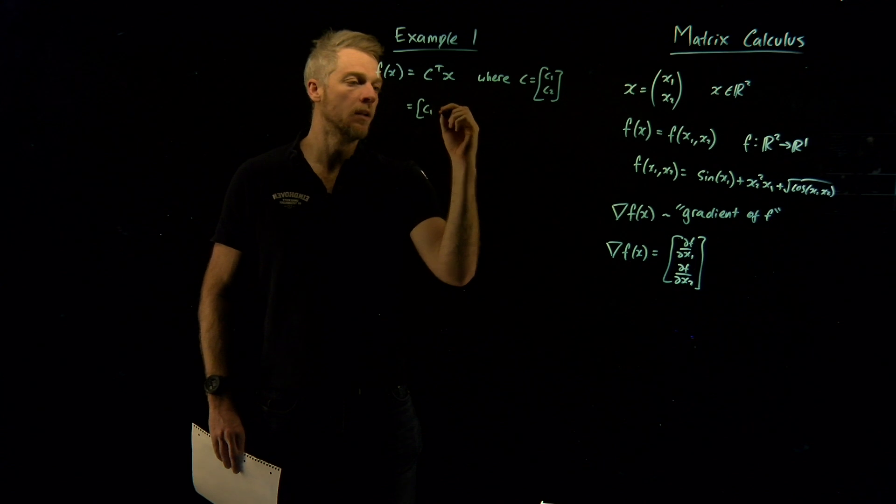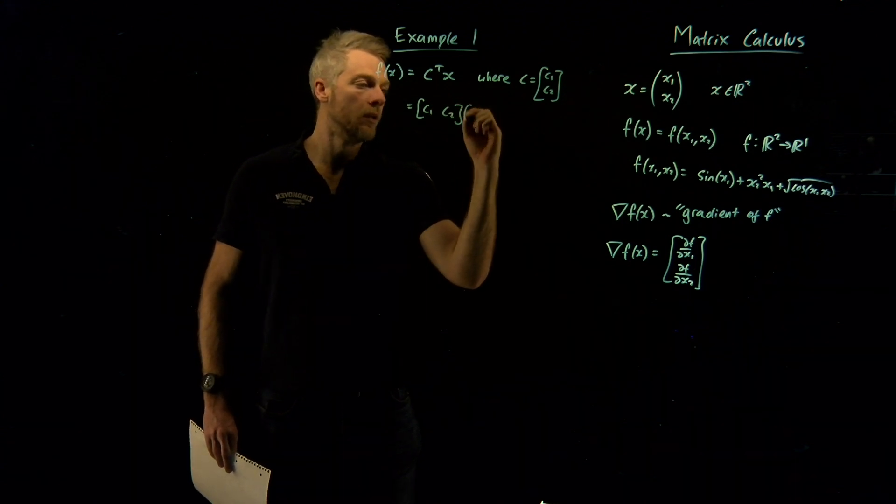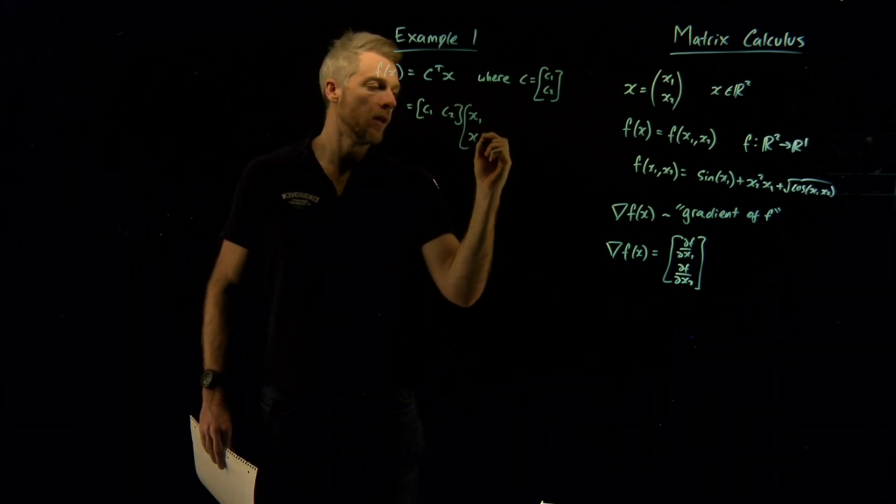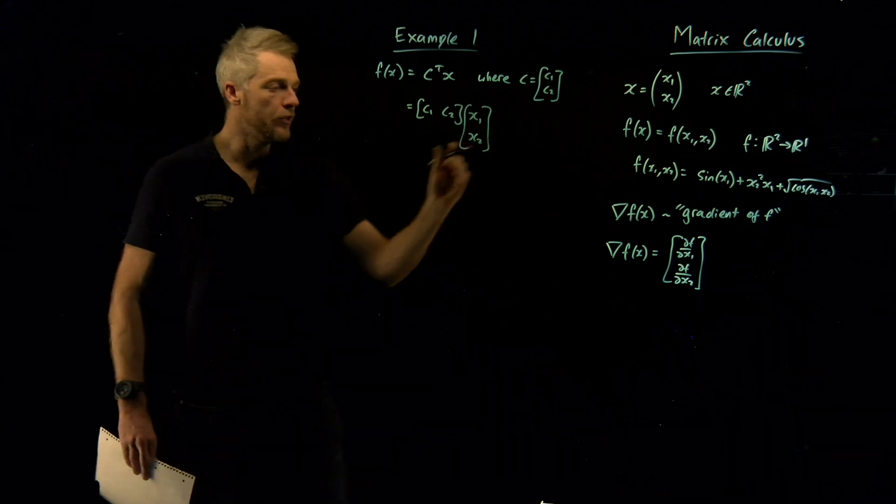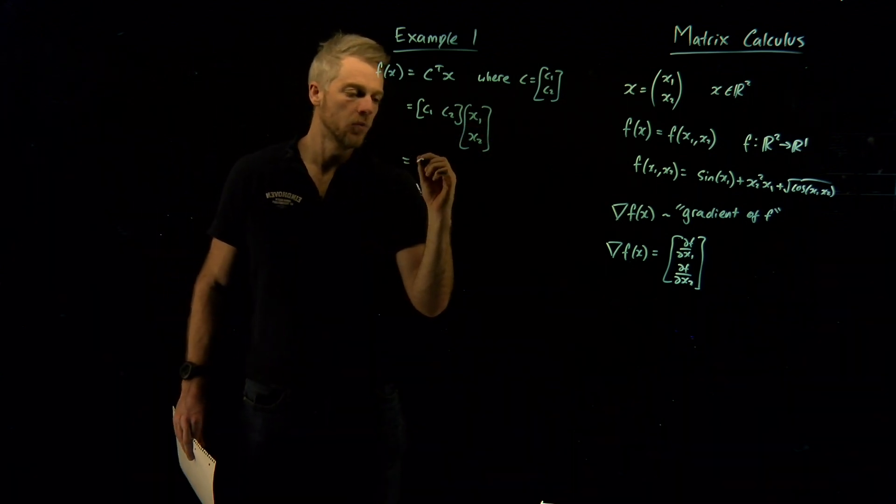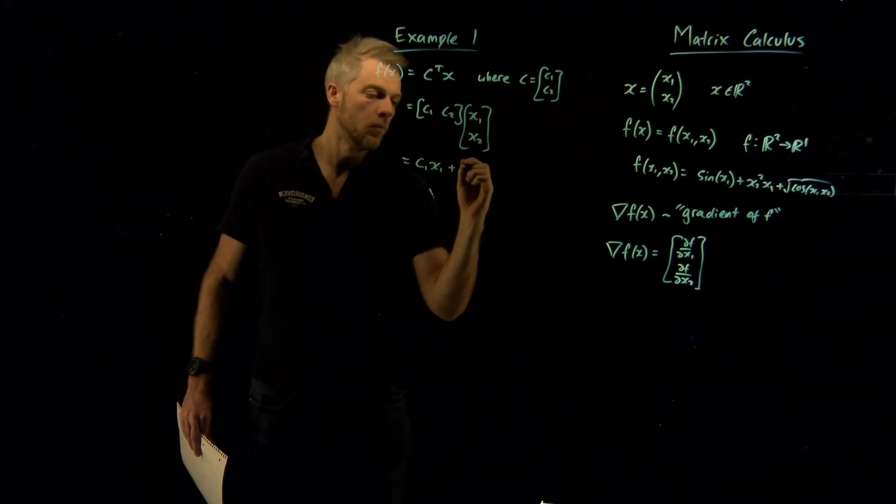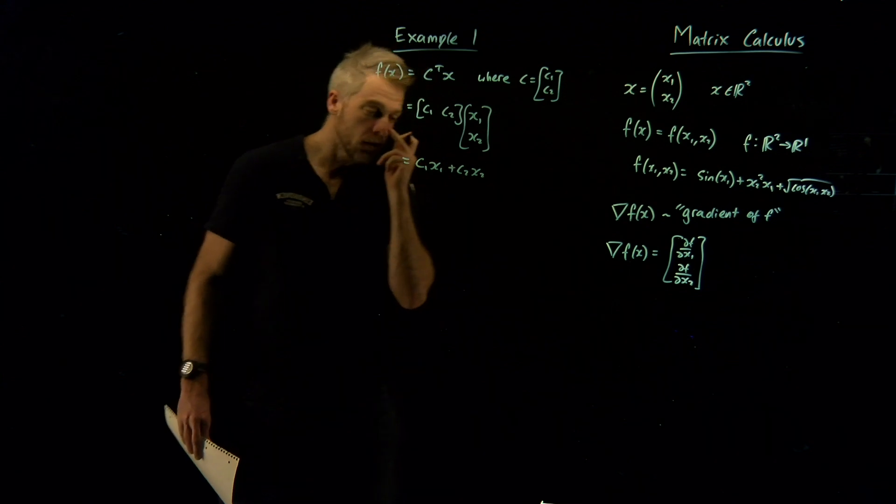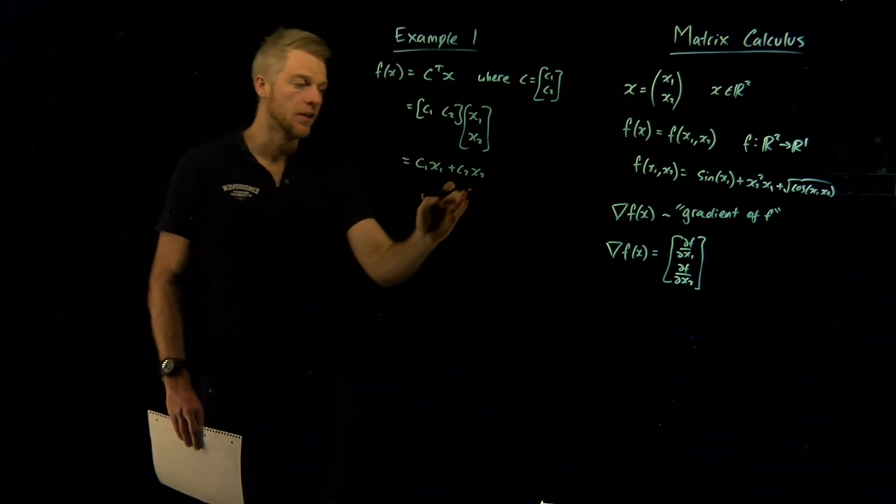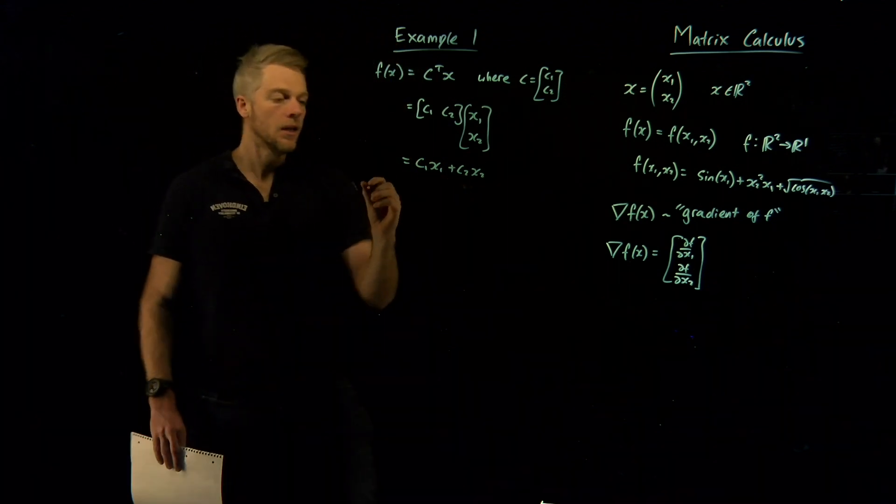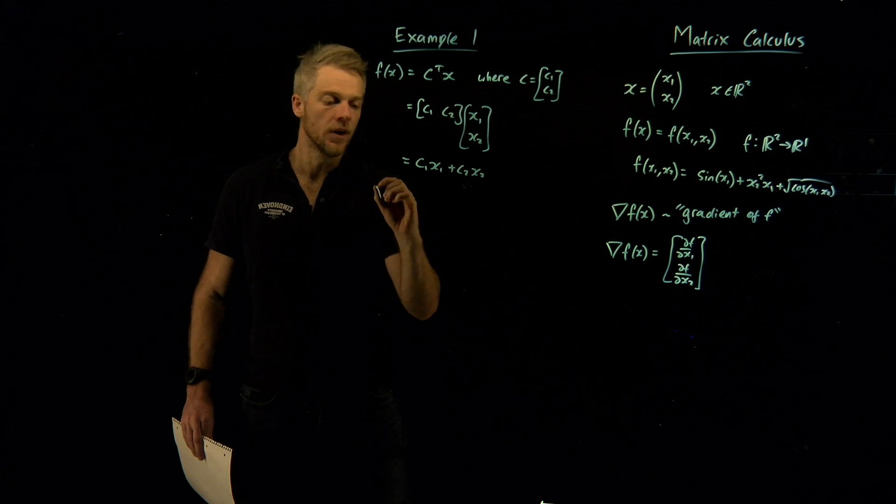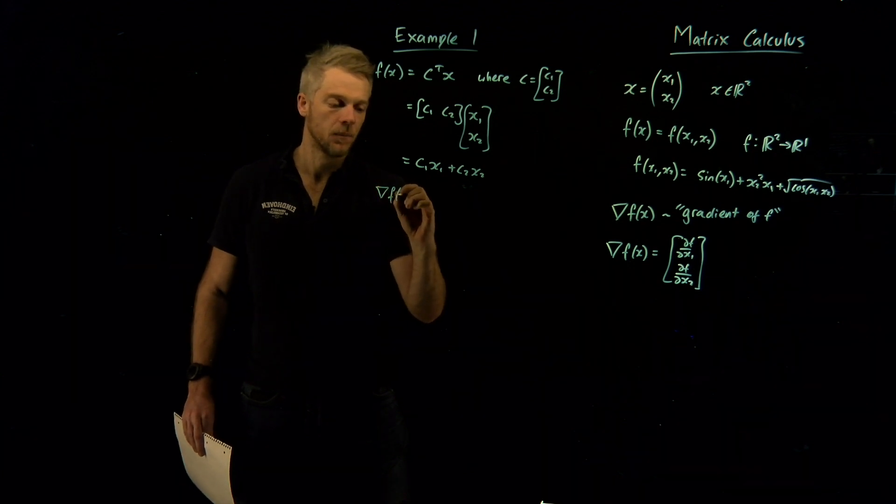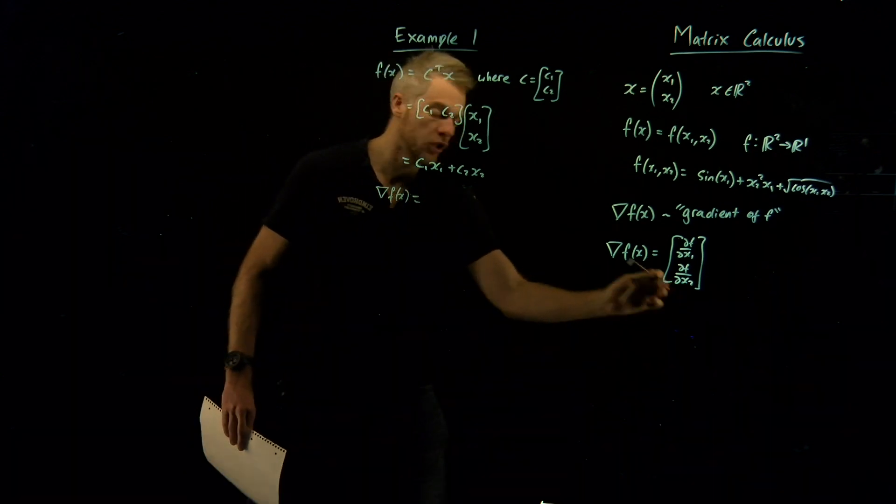Let's expand this out. This is going to be c1, c2 times x1, x2. And if we do the matrix multiplication, that'll be c1 x1 plus c2 x2. So we've got a nice linear function here, which is very lovely.